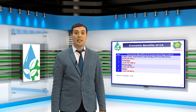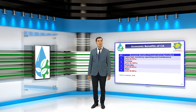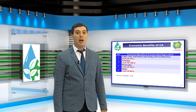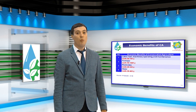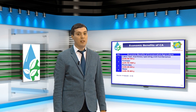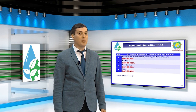As for the economic benefits, by implementing conservation agriculture, farmers save 50–70% on labour, fuel, and machinery operating and maintenance costs, 50–100% on fertilizer, 20–50% on pesticides, and 30–40% on water use. These ranges depend on how long conservation agriculture has been implemented in the field — the more years you use conservation agriculture, the more resources you can save.